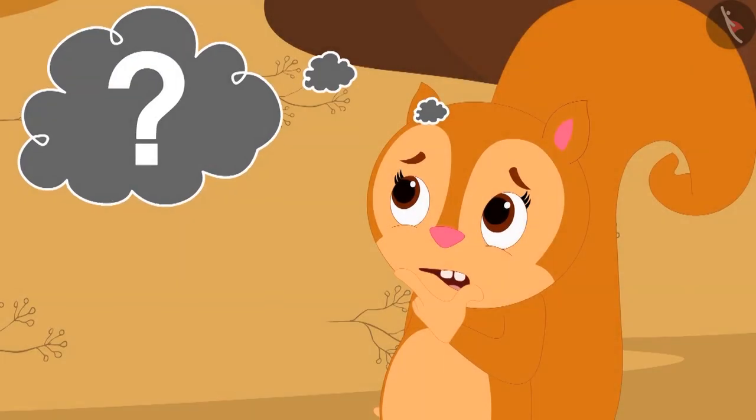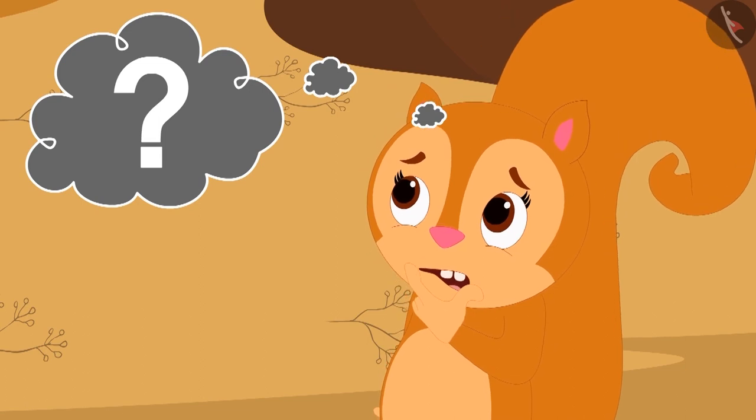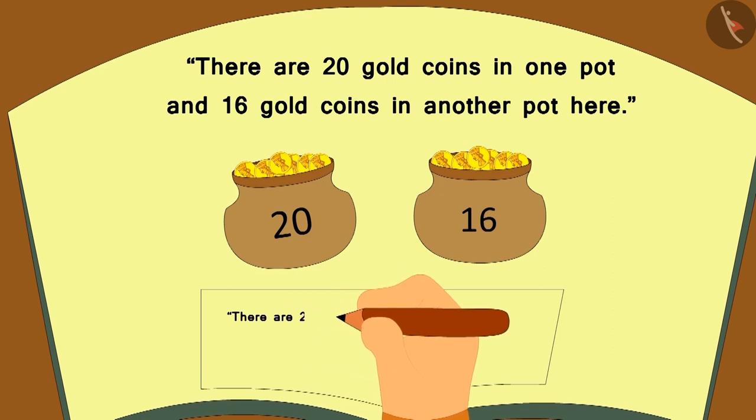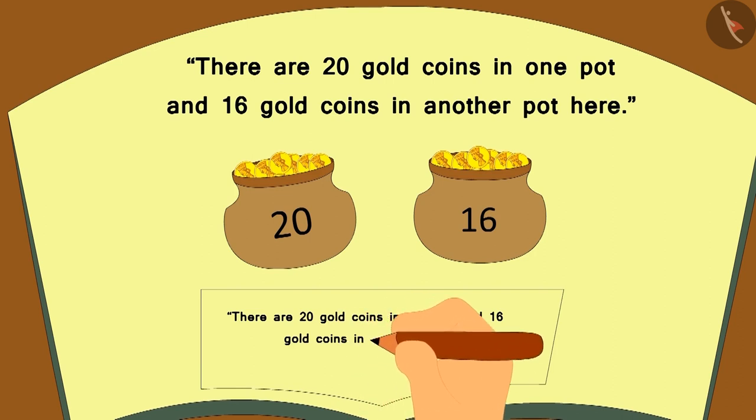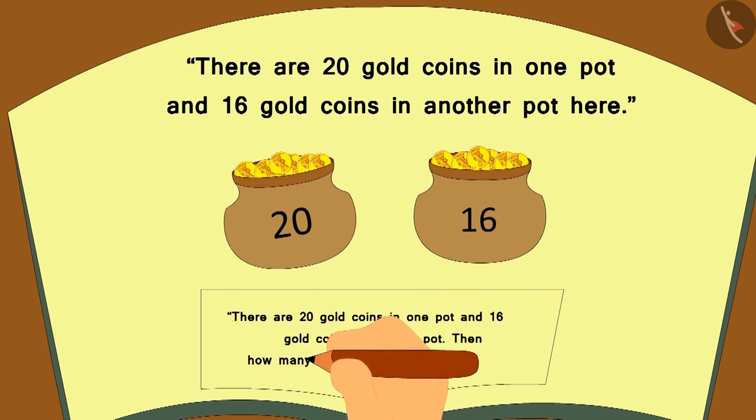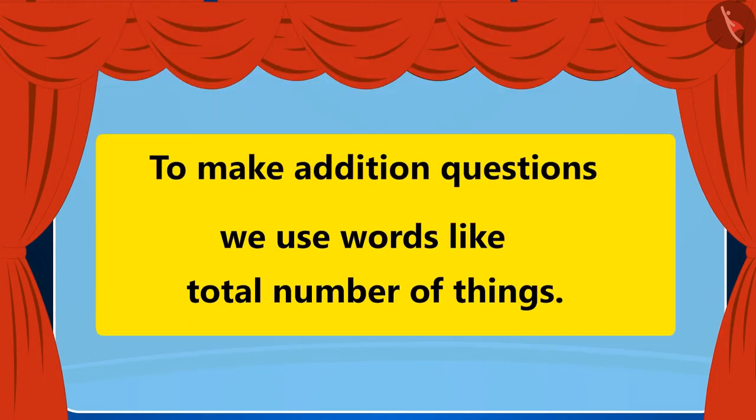After thinking for a while, Chanda wrote down a question there. There are 20 gold coins in one pot and 16 gold coins in another pot. Then, how many gold coins are there in total? Chanda has now made a question of addition.